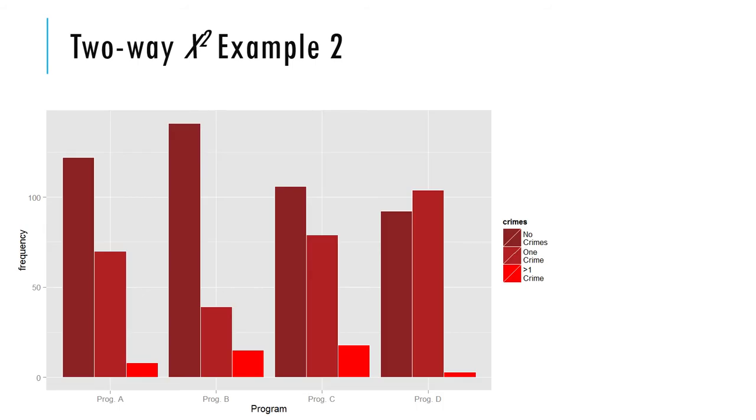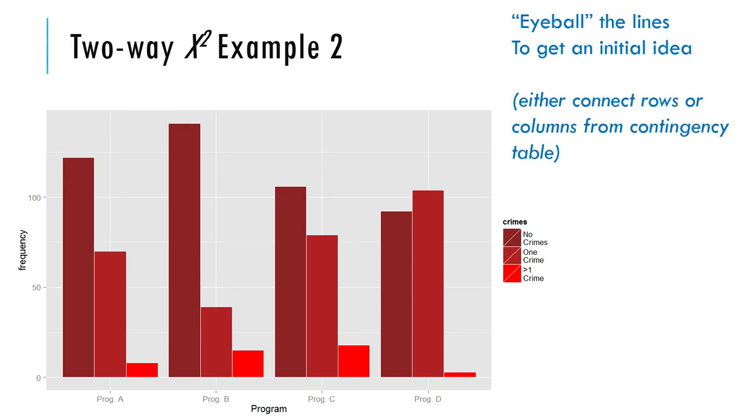We can graph this in two ways. Any time we have a two-way contingency table, you can take the first variable and make the values of that variable the axis values, and then the values of the other variable form the clusters of the bars, or you can do it the other way around. I'll show you both. Let's do our eyeballing of the lines to see if we think there's going to be dependence or independence, because we're looking for parallel lines or non-parallel lines.